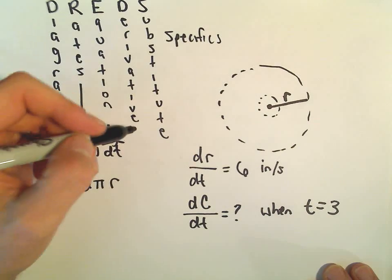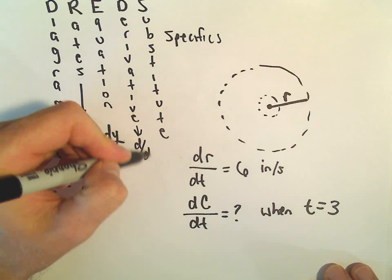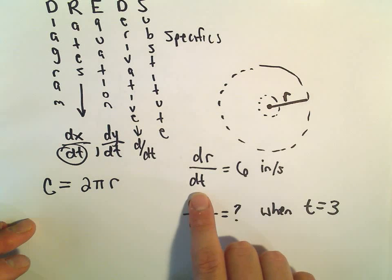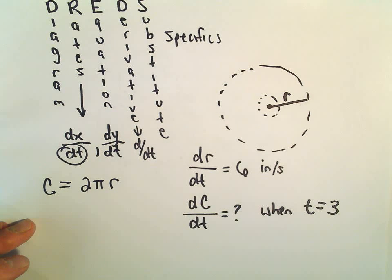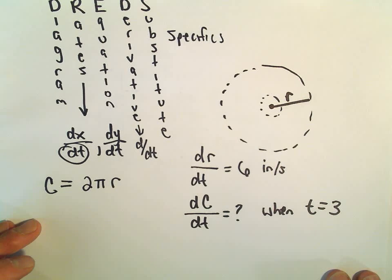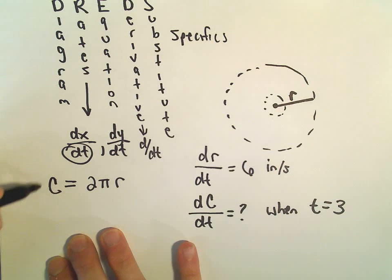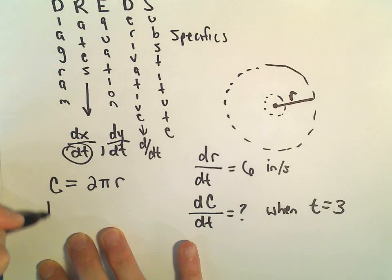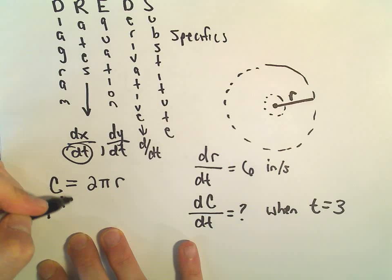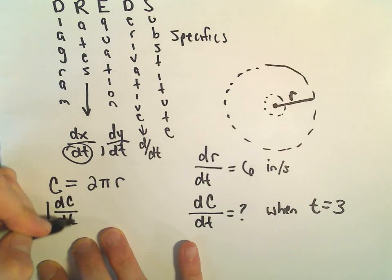And now I'm going to take the derivative. And in this case, I'm going to take the derivative with respect to time. Again, that's whatever's in the denominator. That's what you're taking the derivative with respect to. But now we have to remember to use implicit differentiation. So on the left side, if I take the derivative of 1c, I would get 1. But then I have to multiply by the dc/dt.